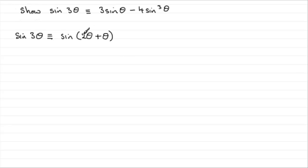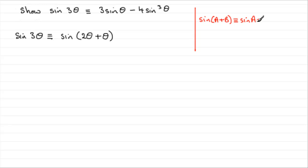Now, you should know the expansion of sine of a plus b. You should know that the sine of a plus b — and you can find this formula in most formula books — is sine a cos b plus sine b cos a. What we're going to do is have a as the 2θ and b as the θ.